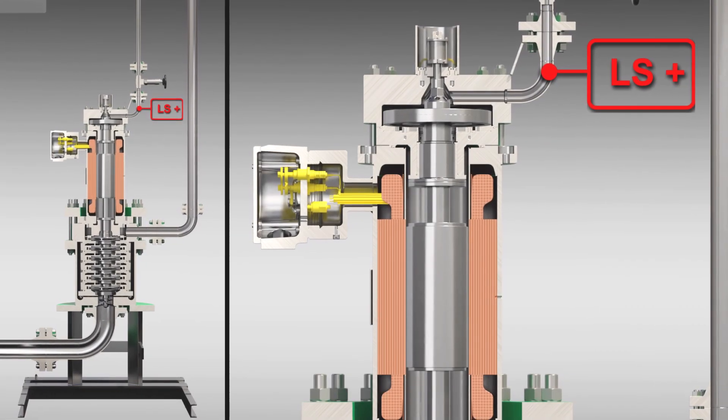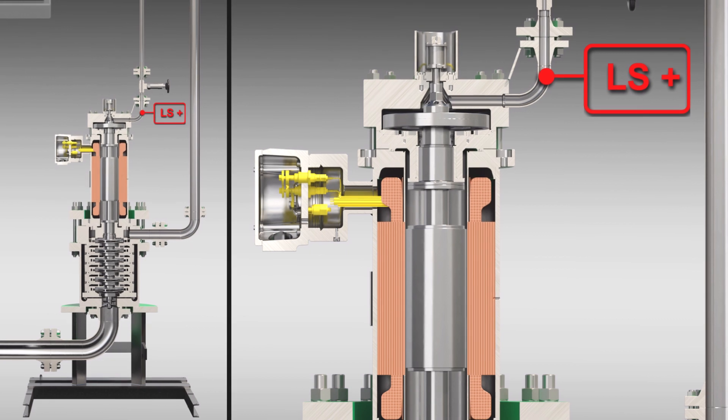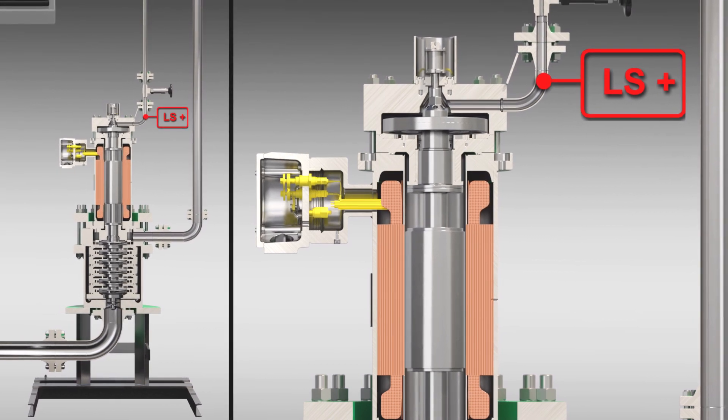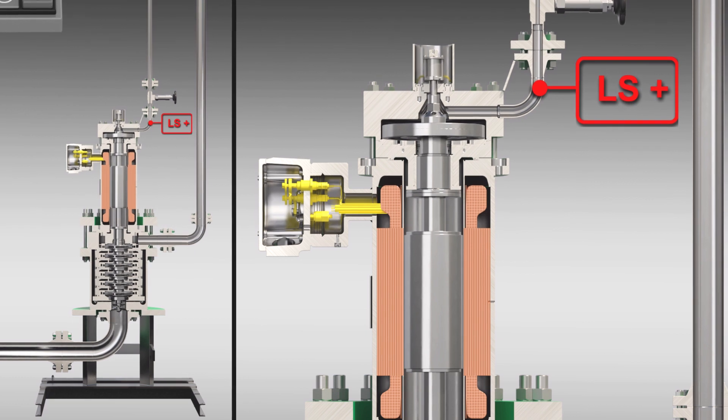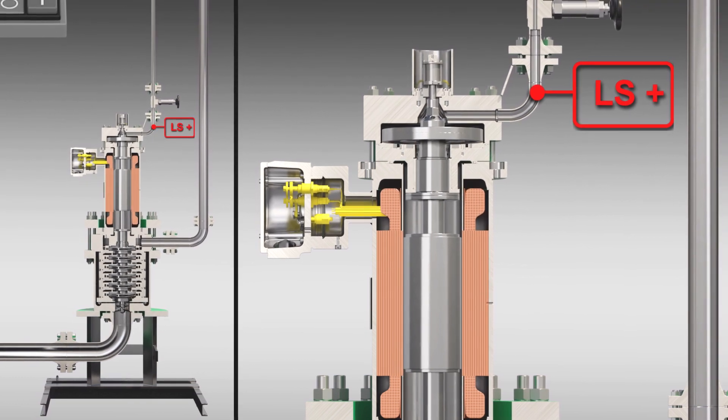Canned motor pumps from Hermetic are also available in vertical design for special applications. Depending on the required pumping parameters, single-stage or multi-stage canned motor pumps are used here.